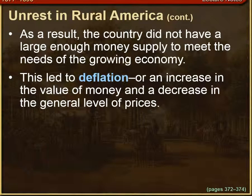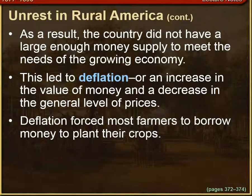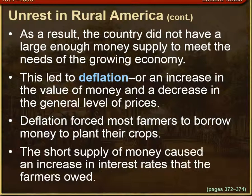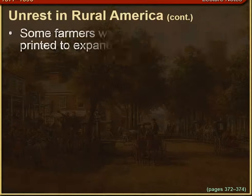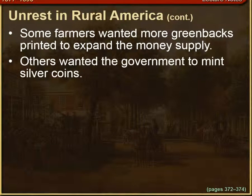This led to deflation, which is an increase in the value of money but a decrease in the general level of prices. Deflation forced most farmers to borrow money so they could plant their crops. The short supply of money caused an increase in interest rates that farmers owed. Farmers wanted more greenbacks printed to expand the money supply again, and others wanted the government to mint more silver coins.